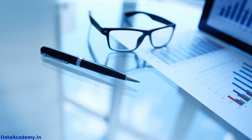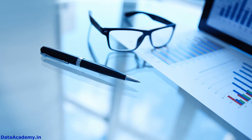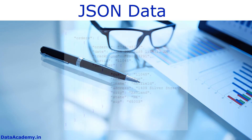Both Mockaroo.com and generatedata.com are built for generating data that is tabular — by tabular I mean having rows and columns that appear as a table. But what about JSON data?